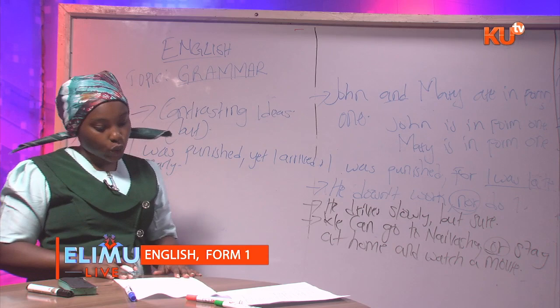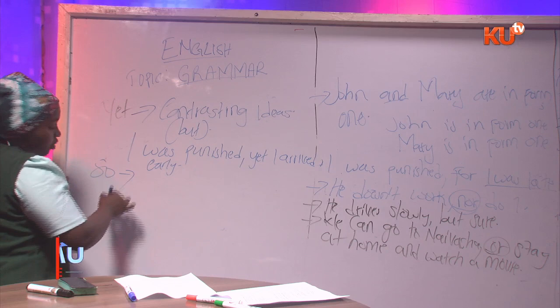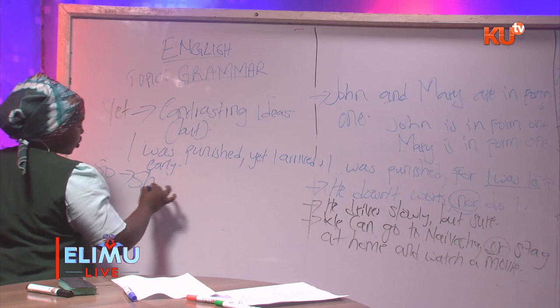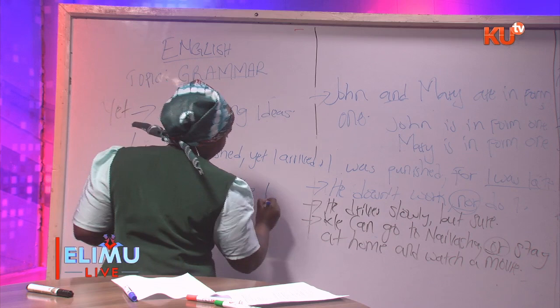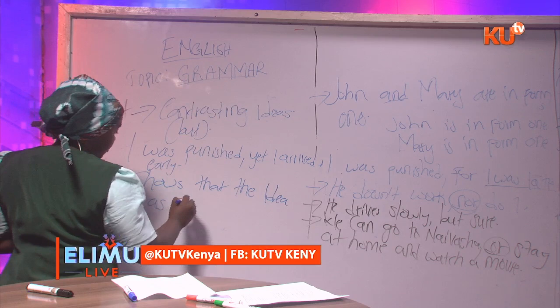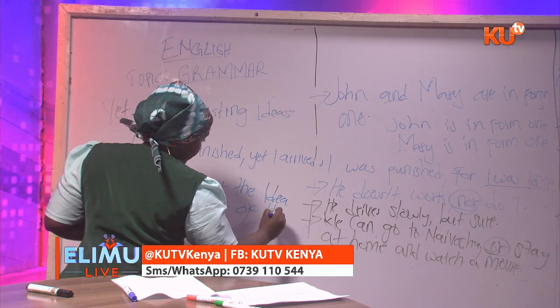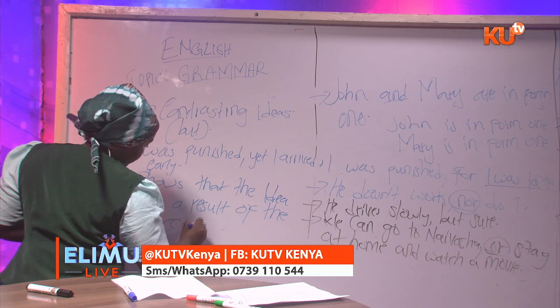Our last coordinating conjunction is 'so.' It shows that the second idea is as a result of the first occurrence. For instance, 'I was sick so I went to the hospital' — going to the hospital was caused by being sick. If you were not sick, you would not have gone to the hospital.